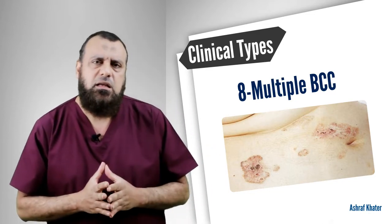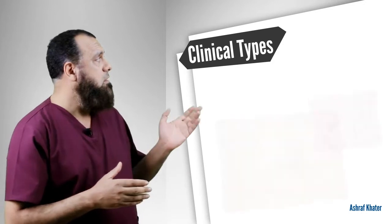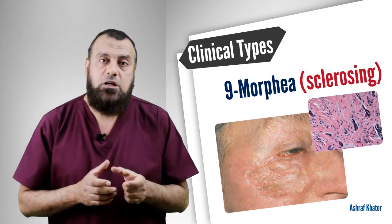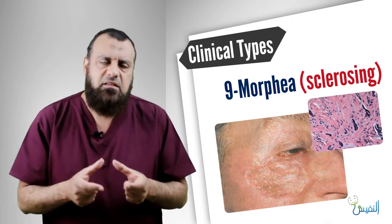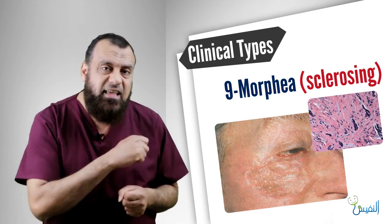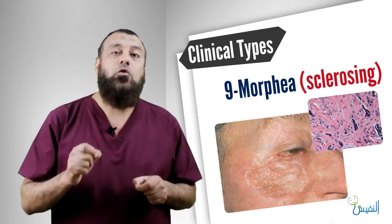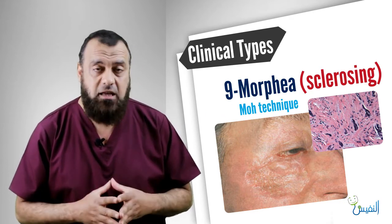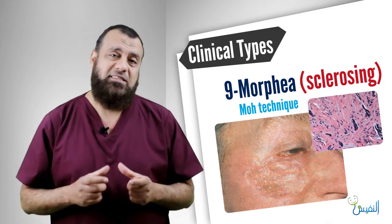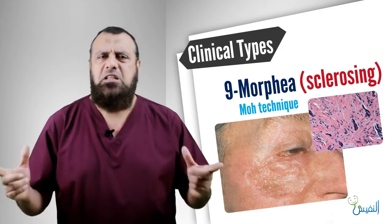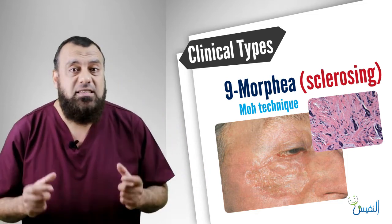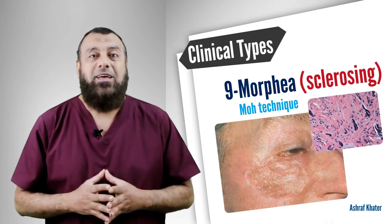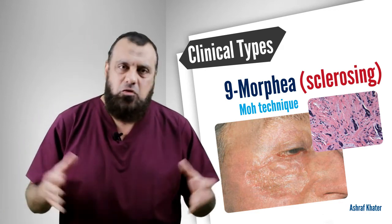Then there is the multiple basal cell carcinoma type, which denotes a hereditary tendency. Then there is the morphia type, also called the sclerosing type. In this type, the induration is marked and may exceed the border of the ulcer. It is difficult to eradicate except by wide local excision with frozen section. The frozen section ensures margin negativity; you must attain negative margins all around, otherwise the morphia type will recur.